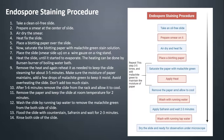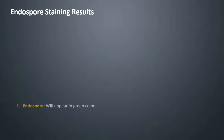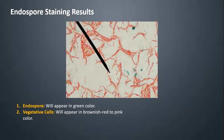Step 14, rinse both sides of the slide. Step 15, allow the slide to dry for a few minutes. Step 16, the slide is now ready to observe under the microscope. Endospore staining results: endospores will appear in green color, and vegetative cells will appear in brownish red to pink color.